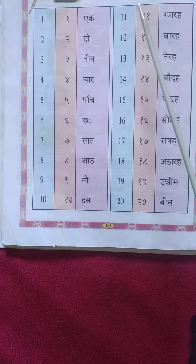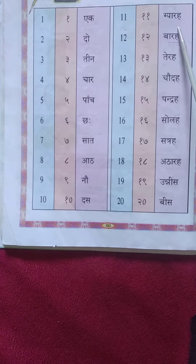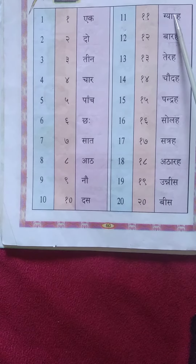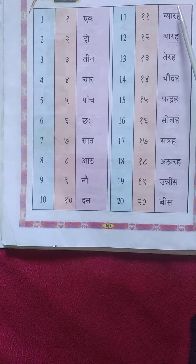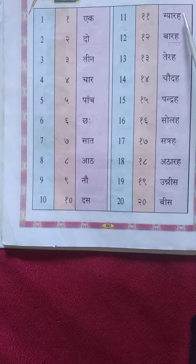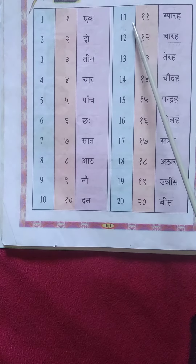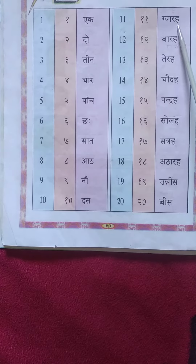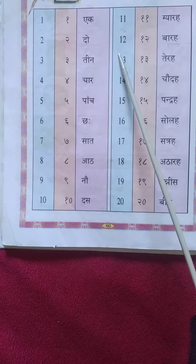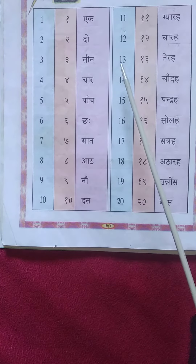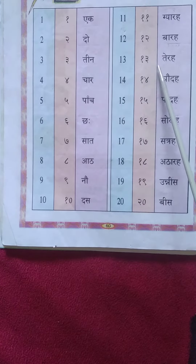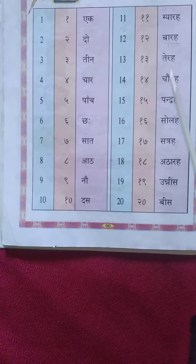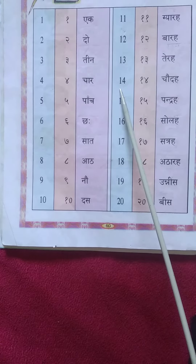Hope you understand this 1 to 10. Let us read from 11 to 20. 11 — see here, Ha is silent, children. When we write, Ha should be written, but when you read it is Gyaara. 12.